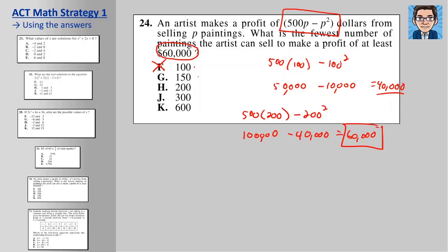500 times 200 minus 200 squared. 100,000 minus 40,000. And that gets us 60,000. Our answer is going to be H. Now it's a little tricky the way it's worded. The fewest number of paintings that make a profit of at least, we're just trying to find out where it's equal. That's going to be the fewest numbers that make it. The thing is, 300 will make us at least 60,000. It's just going to make us a lot more than 60,000. So we're really just trying to find the one that equals 60,000 because that's going to be the lowest number that gets us at least that amount. So H is our answer here.